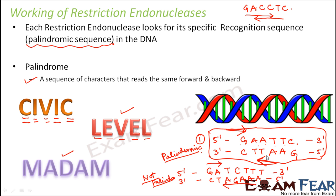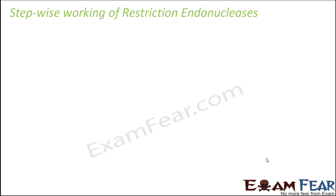Now I was talking about something called sticky ends. There are two ways by which restriction endonucleases can cut the DNA — one is they can form sticky ends and the other is they can form blunt ends. So let us look at the step-wise working of restriction endonucleases and understand exactly how the DNA molecule is cut.